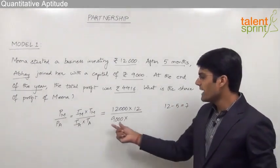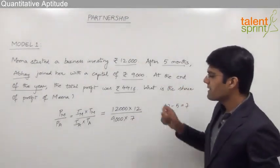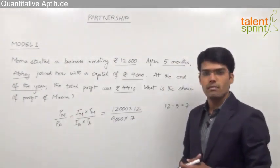Abhay's investment of 9,000 was present for 7 months. This will give us the ratio of profits between Meena and Abhay.